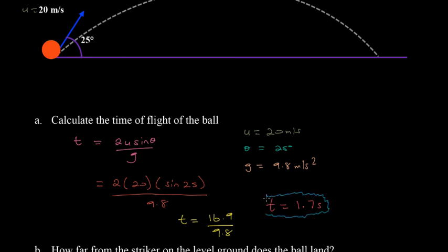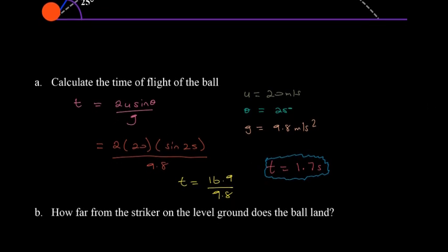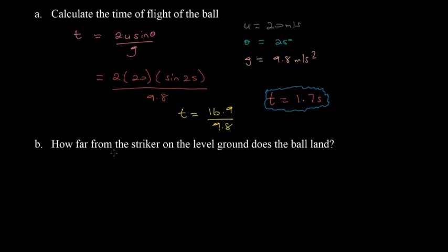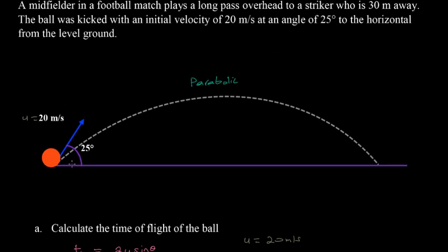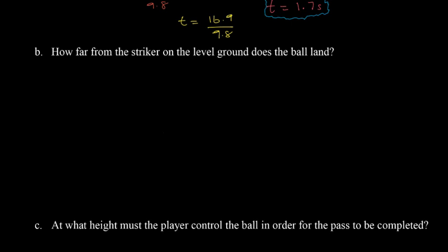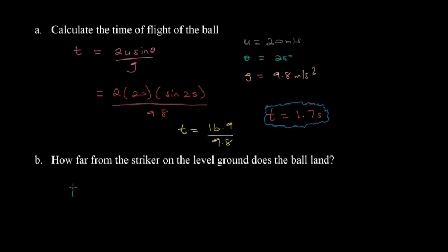In part b it says, how far from the striker on the level ground does the ball land? We need to know what is the horizontal range. To find that, we can use the equation where we say R, which is our horizontal range, is equal to u² sin 2θ / g.